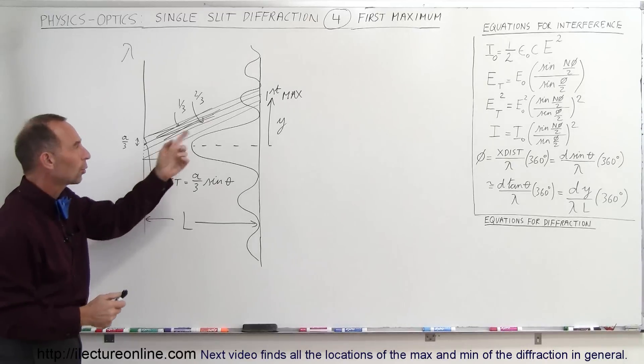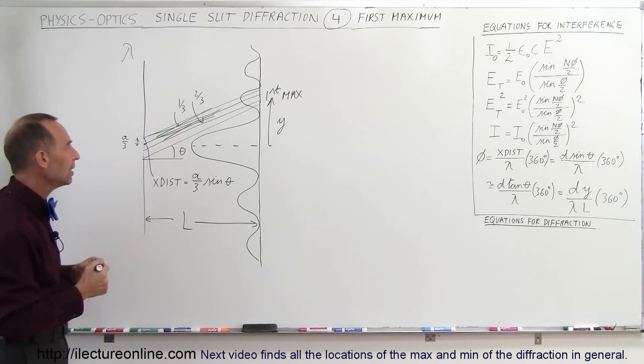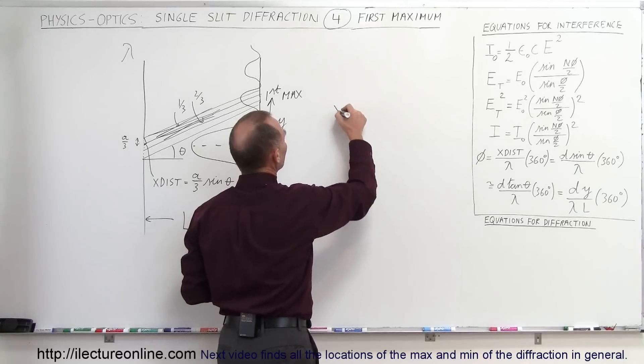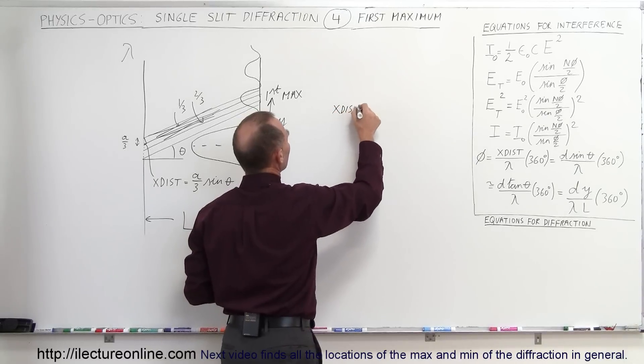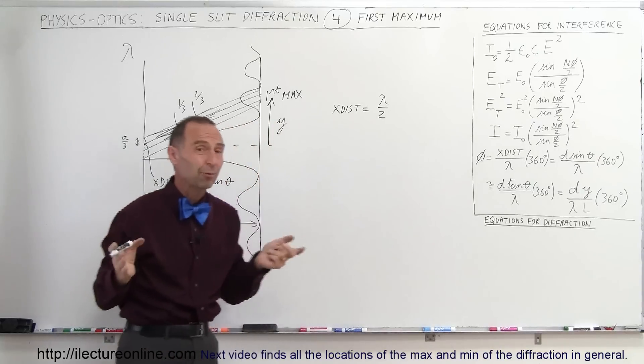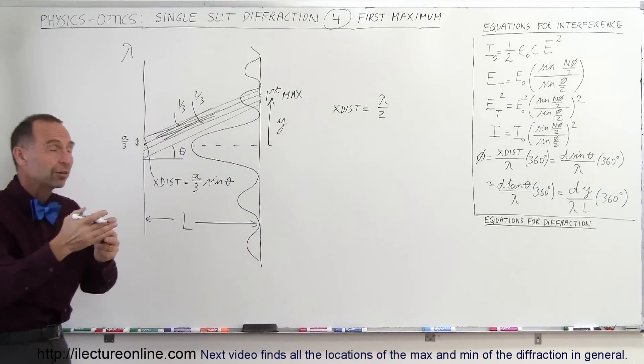Now where will that happen on the screen? Well, what we can say here is that we want the extra distance traveled to be equal to a half a wavelength, because at that point, when they're half wavelengths out of phase, they will destructively interfere with each other.